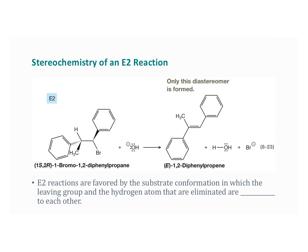Now let's talk about the stereochemistry of elimination reactions. Elimination reactions form double bonds, so instead of R and S configurations, we have E and Z configurations. In the E2 reaction shown here, a new carbon-carbon double bond forms. We can have both E or Z, but what we find is only the E isomer is produced, making this E2 reaction stereospecific. The general rule is that E2 reactions are favored by the substrate conformation where the leaving group and the hydrogen atom being eliminated are anti to each other.